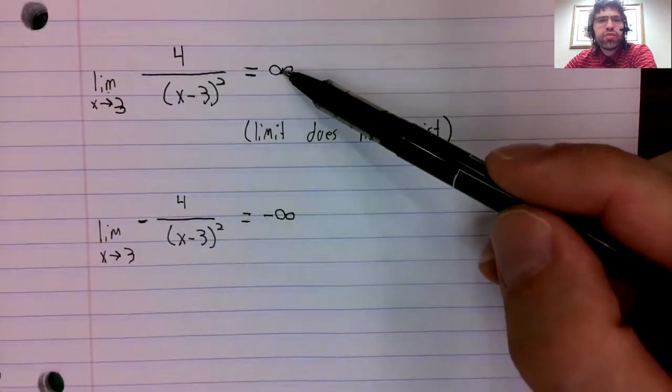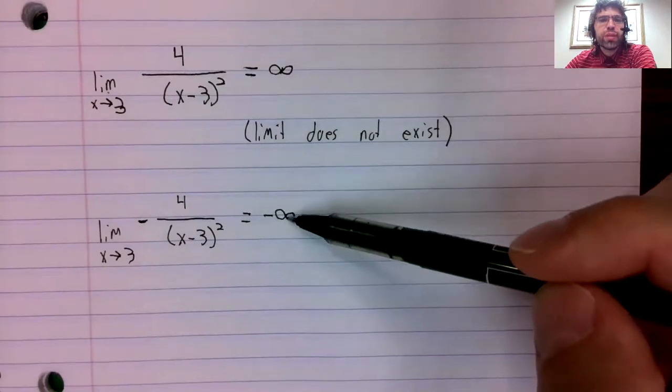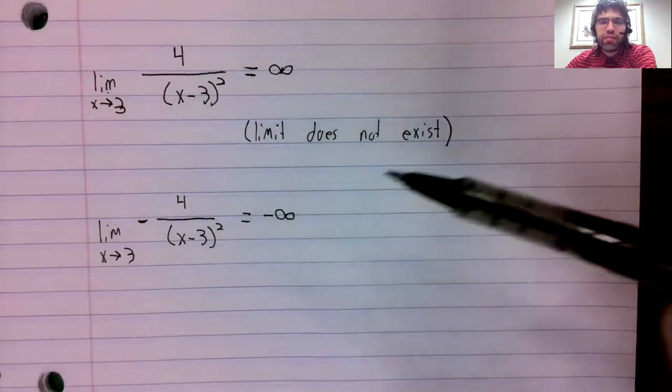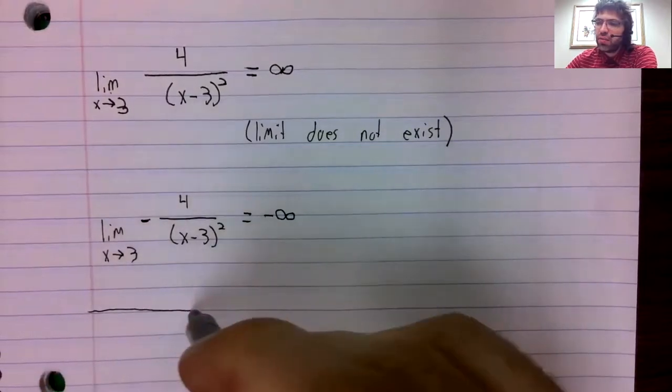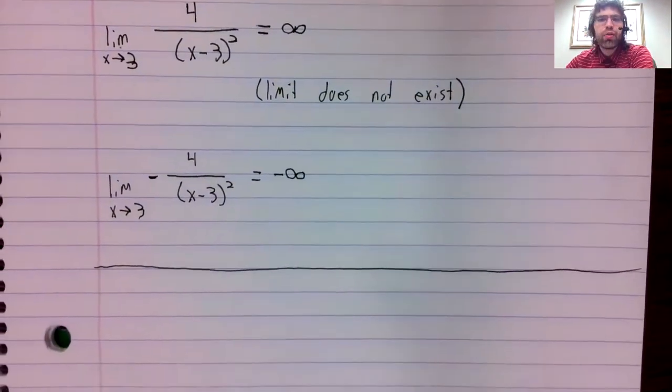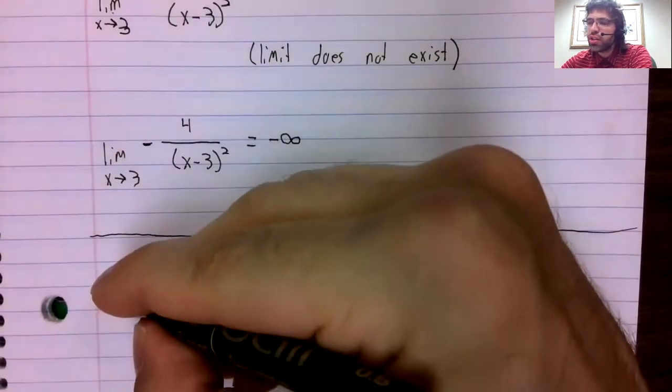Because this represents infinity and this represents negative infinity, we have to be careful with this notation.